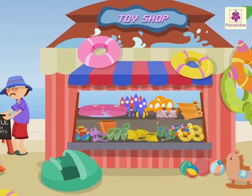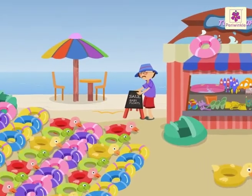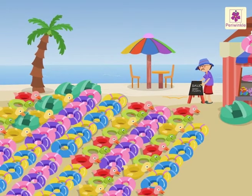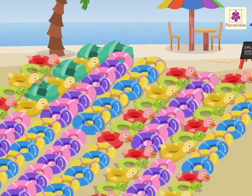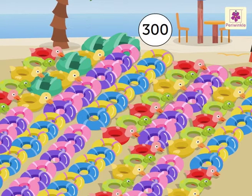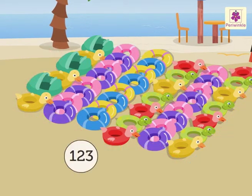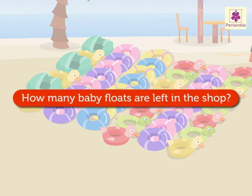Hey, look at the colorful baby floats. They look so beautiful. The shopkeeper had 300 such floats. He sold 123 out of them. Here we have to subtract 123 from 300 to find out the number of baby floats left in the shop.